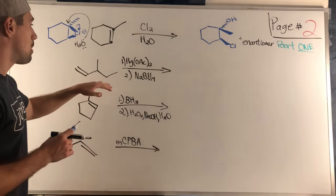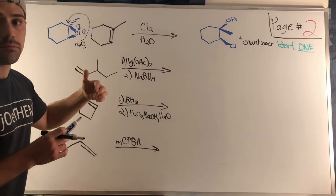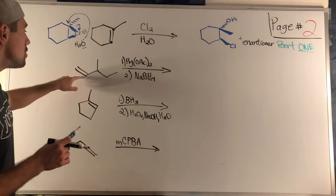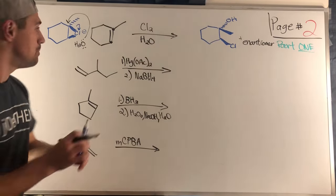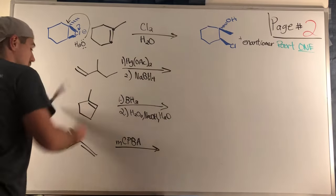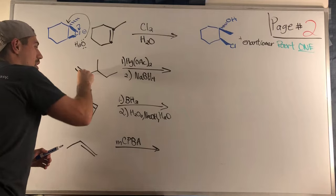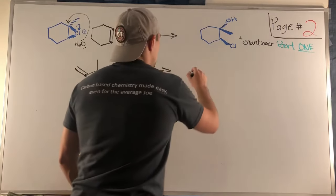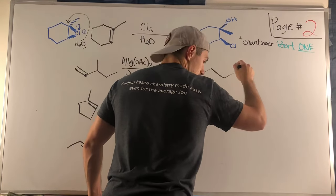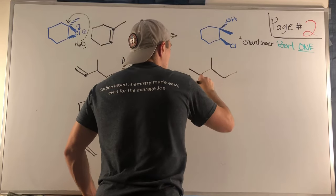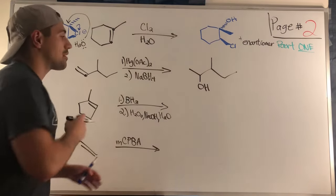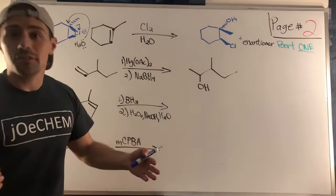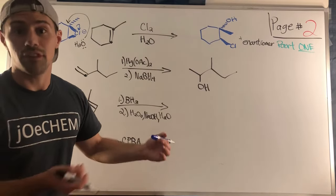The second problem is oxymercuration — we're adding an OH across the double bond in a way where there are no rearrangements. It's a straight Markovnikov condition with no rearrangements, so all we need to do is attach the OH at the more substituted carbon. You don't need to reflect stereochemistry for this mechanism. If you need the mechanism explained, comment on this video and I'd be happy to provide that video.